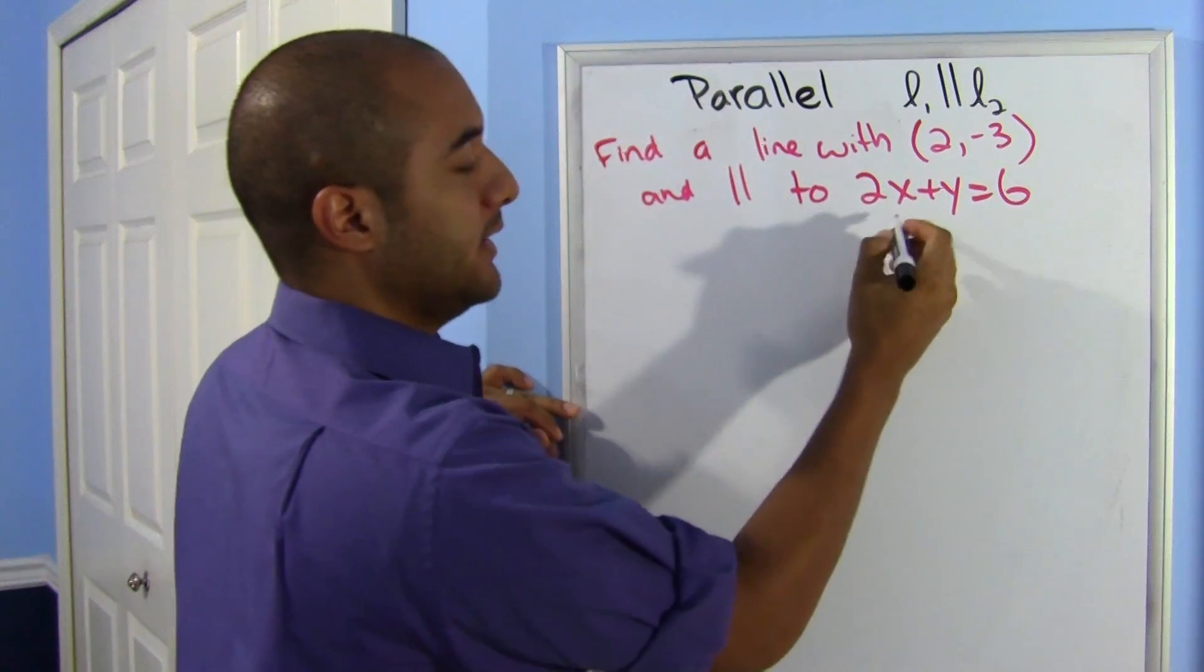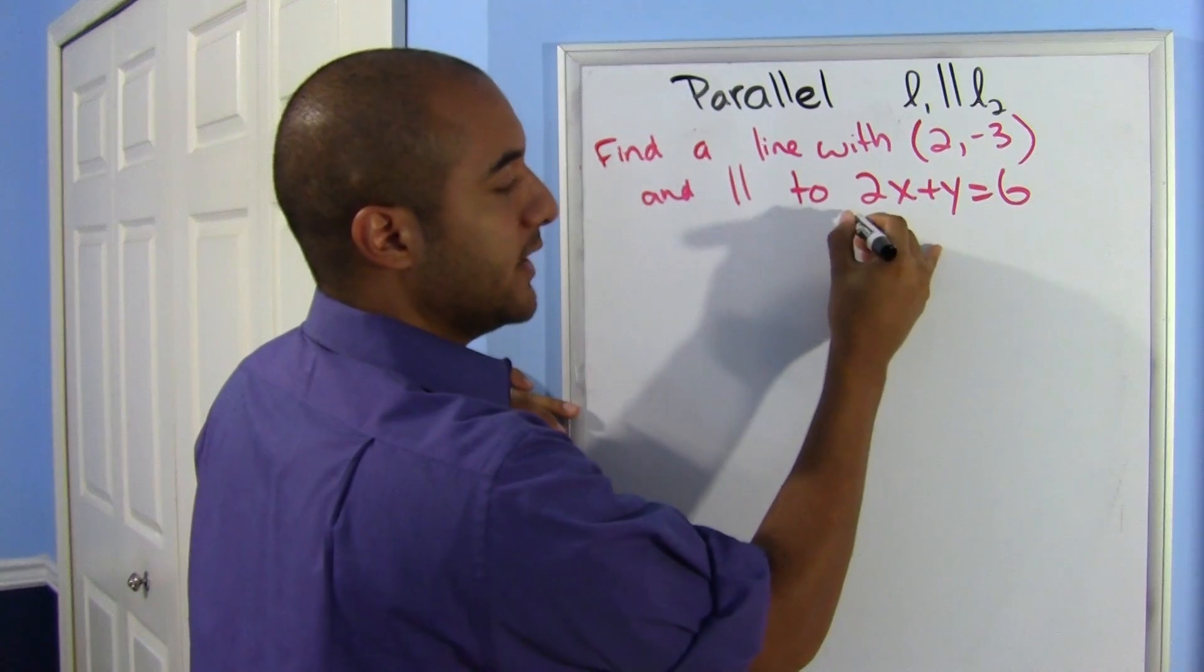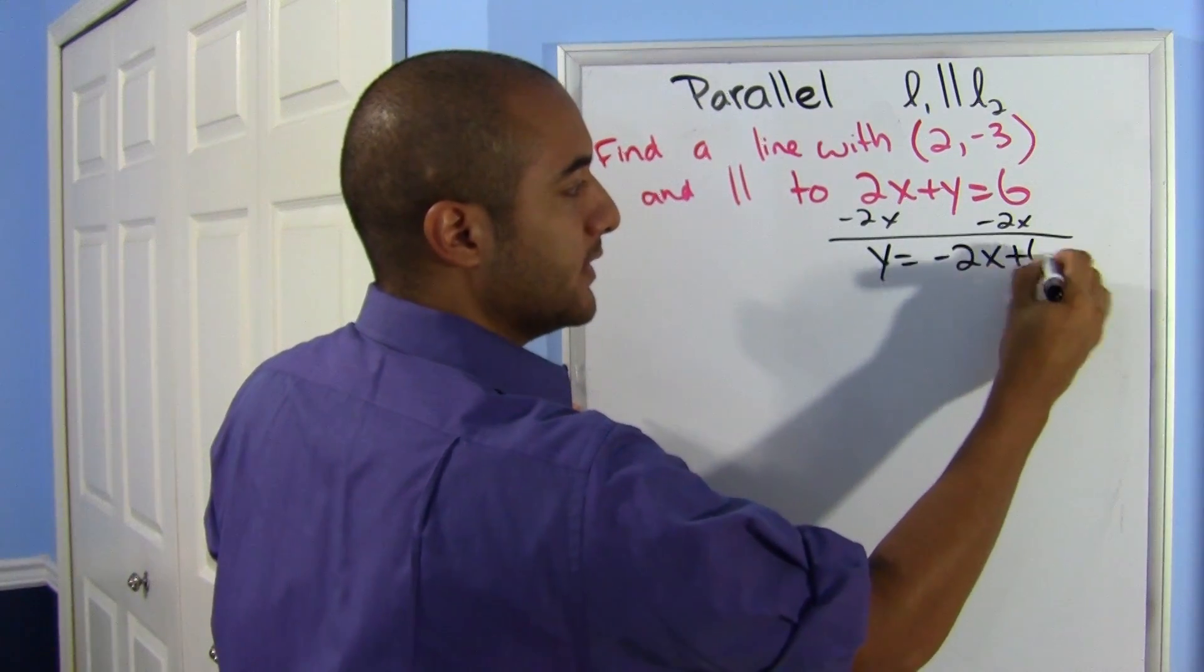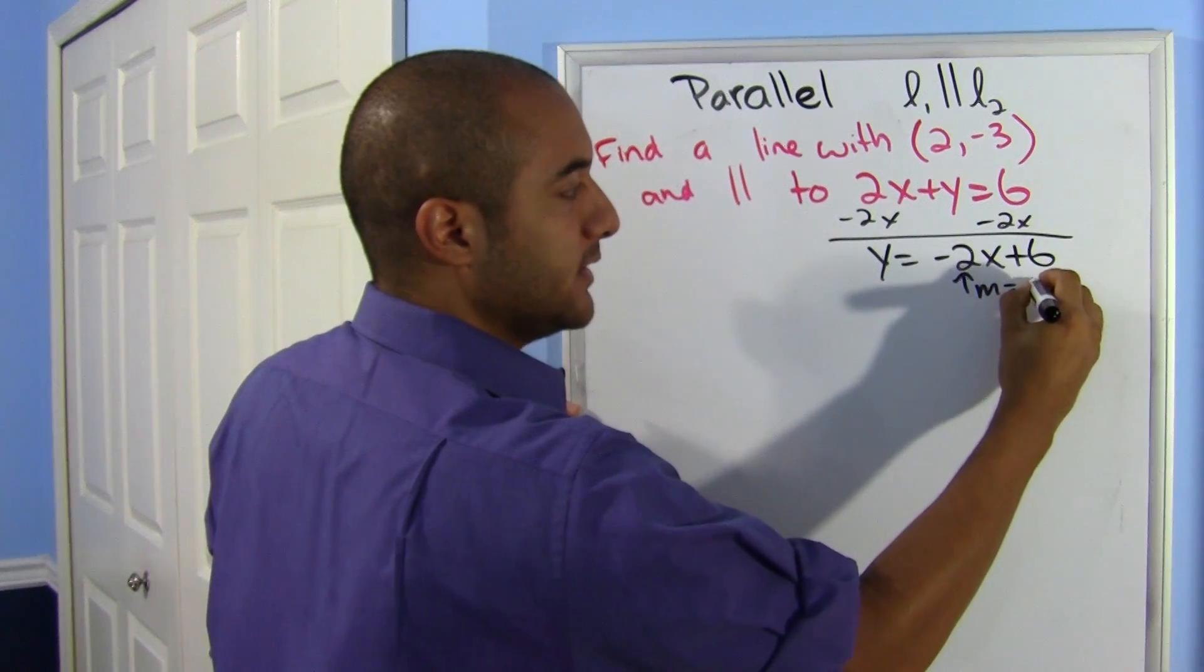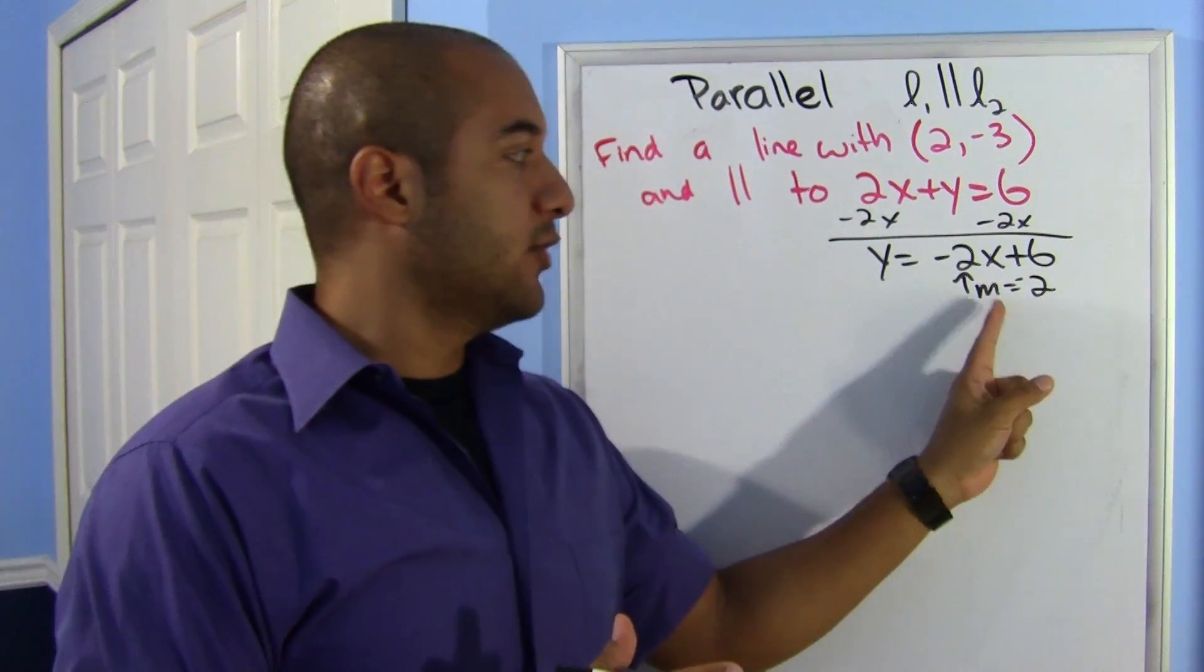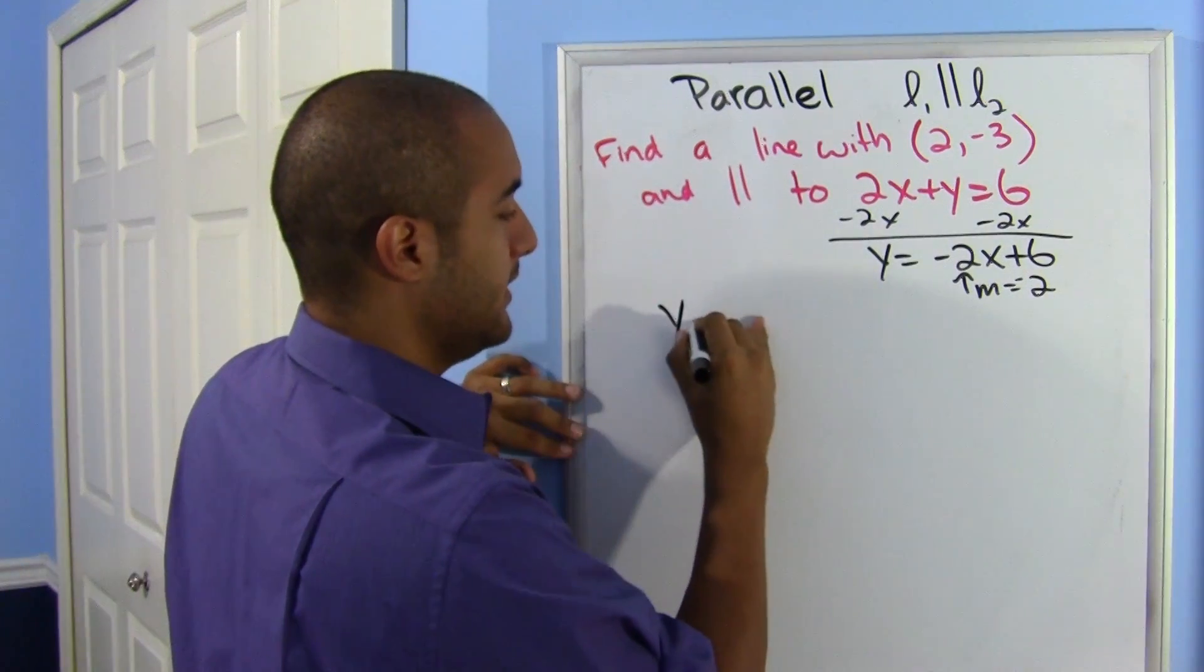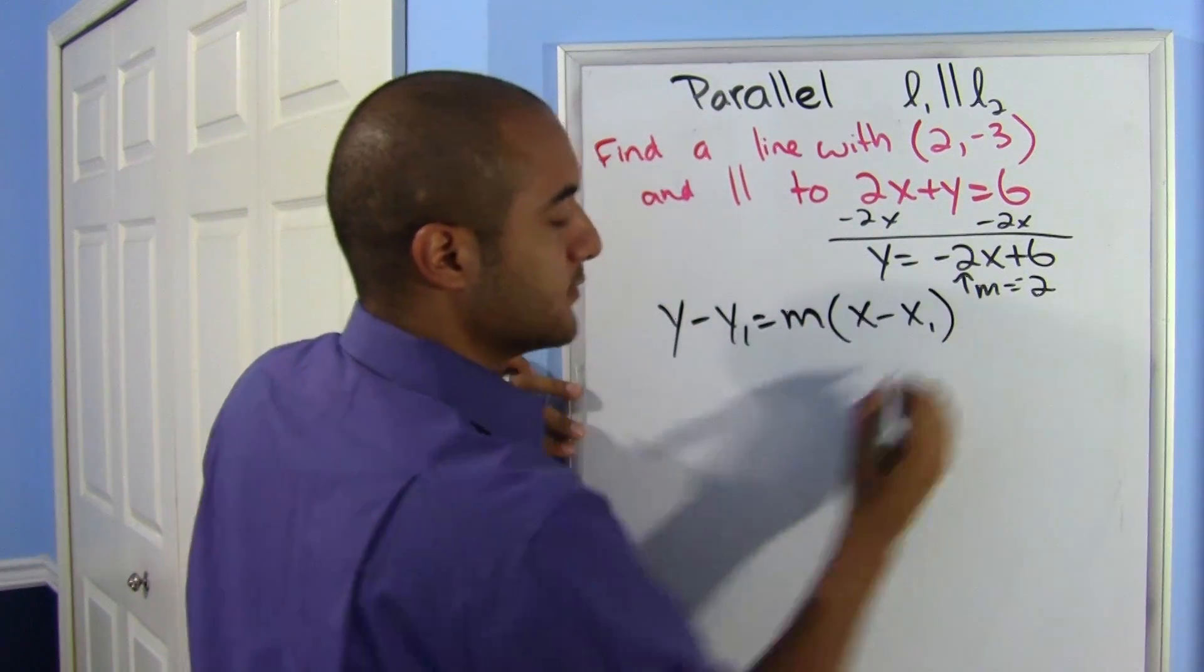So using the line that they gave us, I'm going to write it over in y equals mx plus b form, in slope-intercept form. So to do that, I'll subtract 2x from both sides. And I get y equals negative 2x plus 6. So now I know my slope. My slope has to be negative 2. So look at all the information I have. I have a slope and a point. Point and a slope. A point and a slope. Point-slope form.